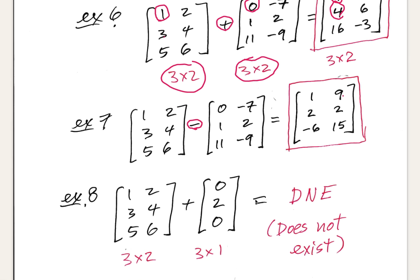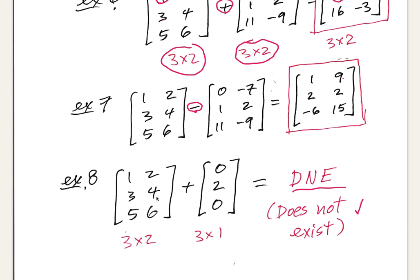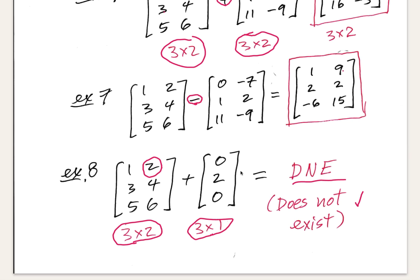Now, if I try to add a 3 by 2 matrix and a 3 by 1 matrix, the answer is DNE — does not exist. There's no such thing as the sum of these two matrices because they have different dimensions. For example, the entry at the first row and second column of the larger matrix has no corresponding entry in the second matrix, since it only has a single column.